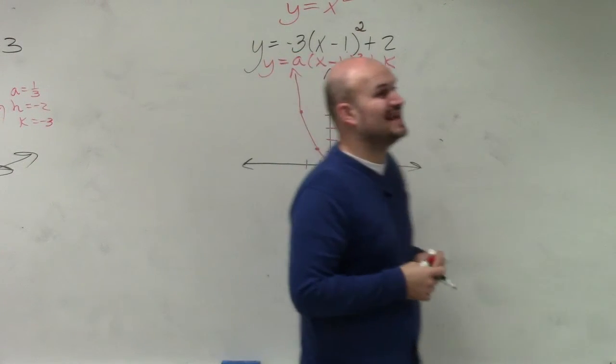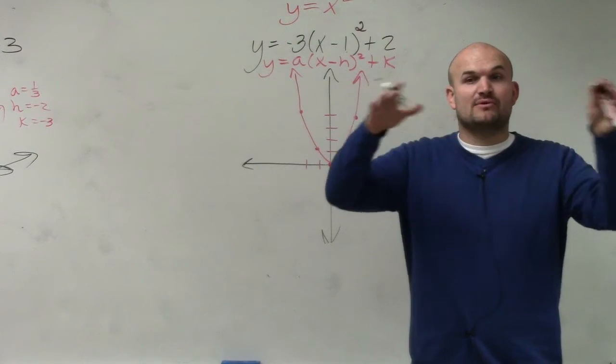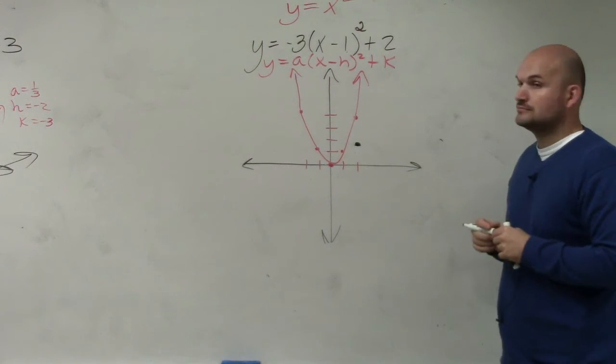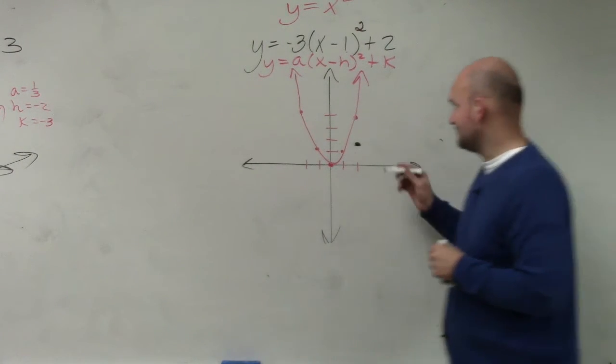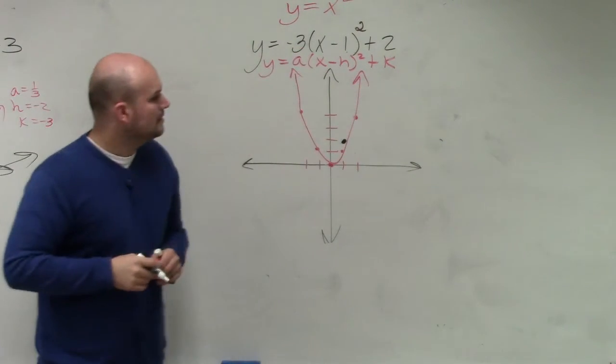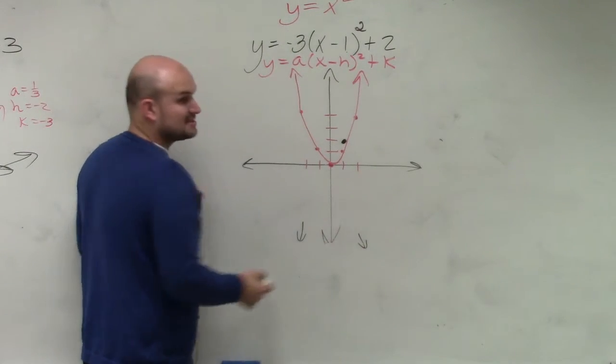Now, in this case, you guys can see that a is negative, right? So instead of the graph opening up, it's now being reflected down. Yes? Yes, thank you. So now the graph we know opens down. It's being reflected over the x-axis.